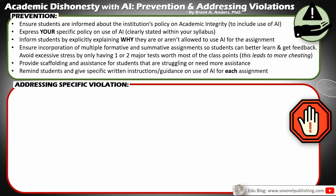Finally, remind students and give specific written instruction guidance on the use of AI for each assignment. This needs to be in the rubric and in the instructions themselves. There needs to be a clear understanding of what they can and can't do with AI for that specific assignment or assessment. The clearer we are at every step, the less likely they are to accidentally use AI or resort to AI, because we've implemented all these good preventative steps.